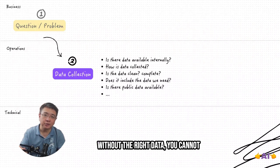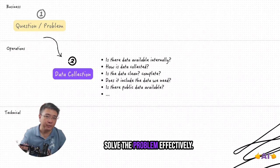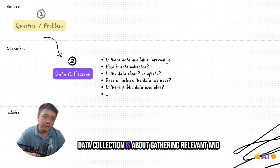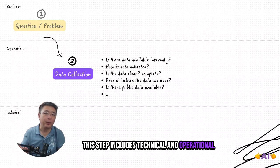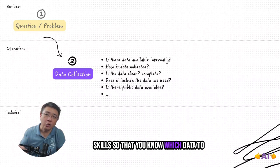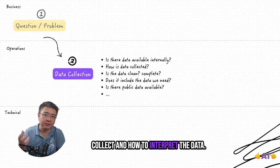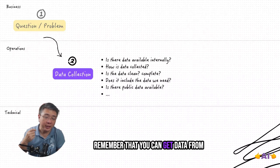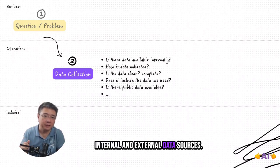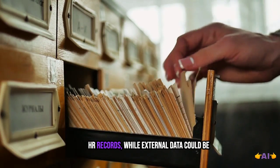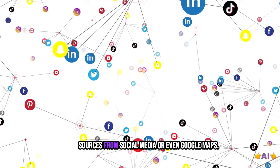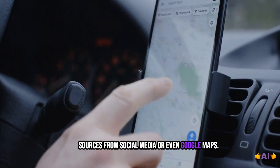Next step is data collection. Without the right data, you cannot solve the problem effectively. Data collection is about gathering relevant and accurate information to support your analysis. This step includes technical and operational skills so that you know which data to collect and how to interpret the data. Remember that you can get data from internal and external data sources. Internal data might include sales records, HR records, while external data could be sourced from social media or even Google Maps.